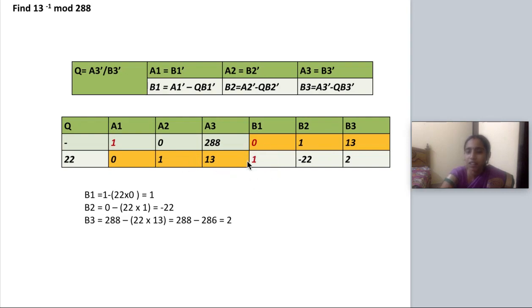Next I have to find the value of B1. So B1 is equal to A1 dash minus Q into B1 dash. So 1 minus 22 into 0 that is 1. Then B2, old A2 value minus Q into old B2 value. So 0 minus 22 into 1 that is minus 22.